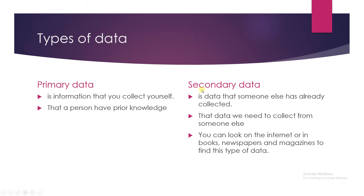Secondary data is the kind of data that we need to collect from someone else. That can be a person, a book, a newspaper, a magazine, or anything — or you can search from the internet. So there are two types of data: one is primary and the second is secondary data.